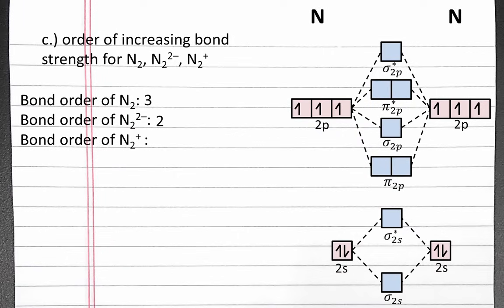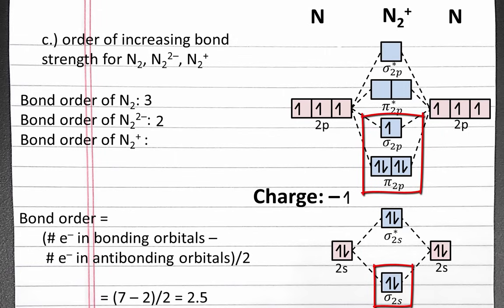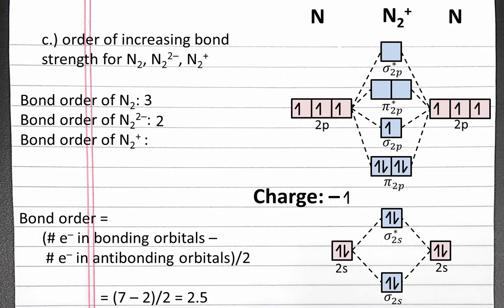Now we can calculate the bond order of N2⁺. The charge of N2⁺ means we have one less electron, giving a total of 9 electrons. We fill the molecular orbitals starting with the lowest energy. To calculate the bond order of N2⁺, we have 7 electrons in bonding orbitals, subtract 2 electrons in antibonding orbitals, which is 5, divided by 2, which is 2.5. So the bond order of N2⁺ is 2.5.